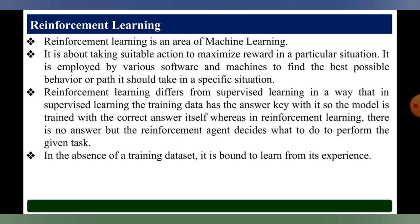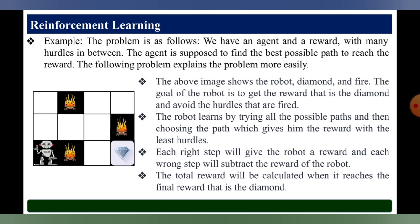In the absence of training data sets, the agent is bounded to learn from its experience. For example, if we have an agent and a reward with many hurdles in between, the agent is supposed to find the best possible path to reach the reward. The image shows a robot, a diamond, and fire.